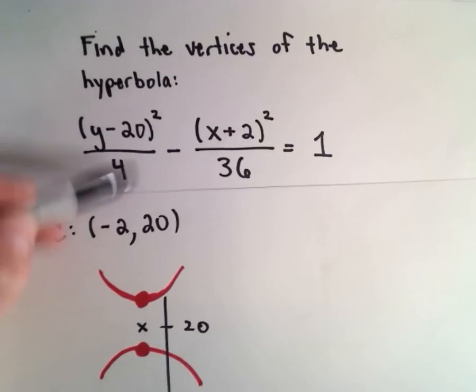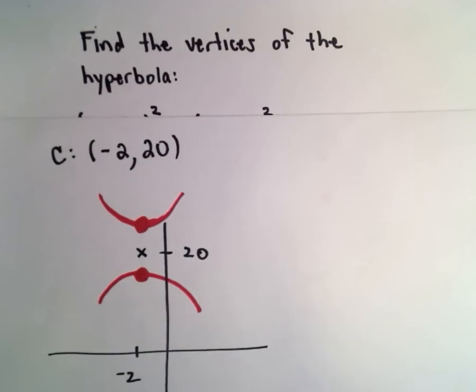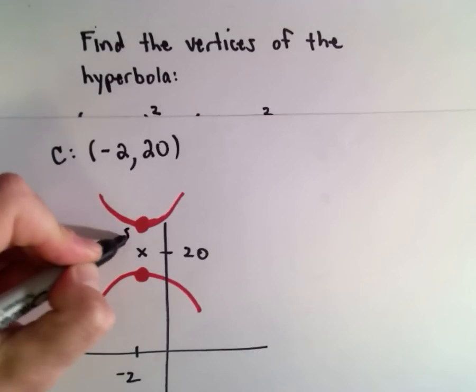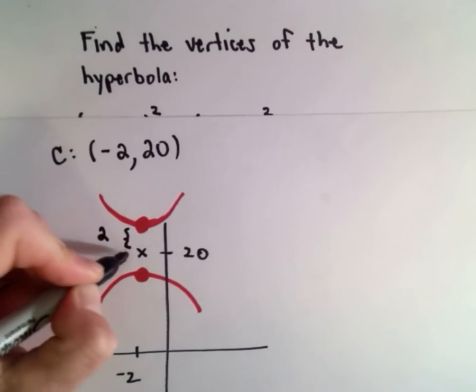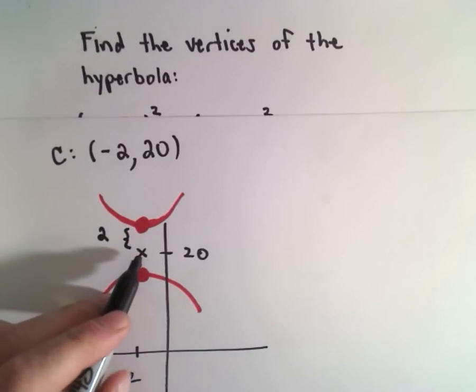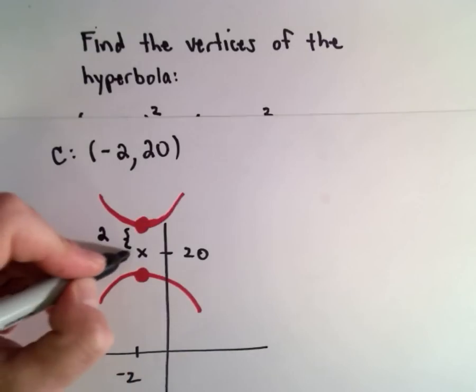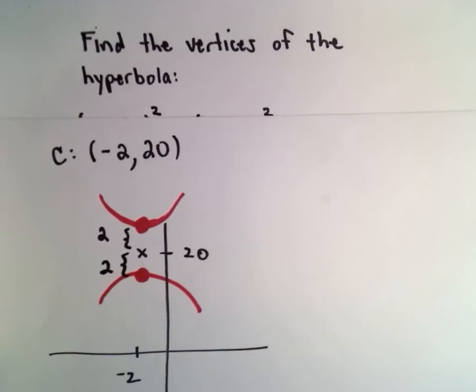Okay, so we've got y minus 20 squared divided by 4. If we take the square root of 4, we'll get 2. And that's going to be our a value. And that a value tells us, from the center, how far, how many units you move to get to the vertices.